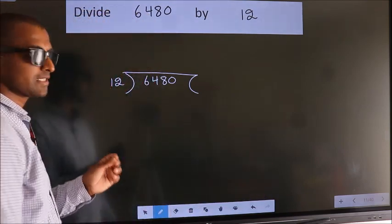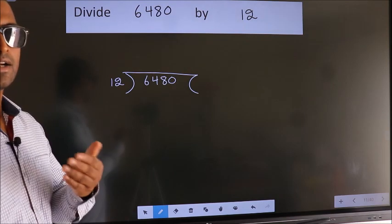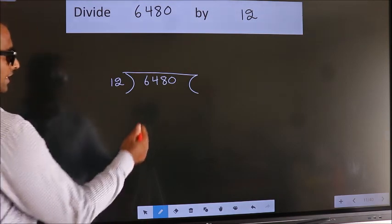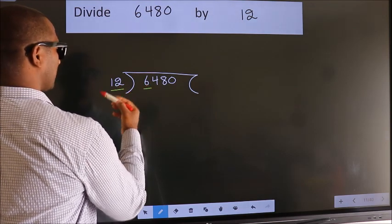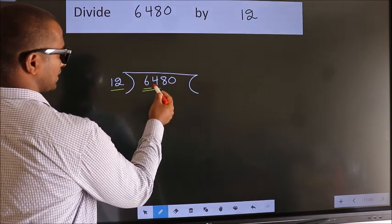This is your step 1. Next, here we have 6, here 12. 6 is smaller than 12, so we should take 2 numbers: 64.